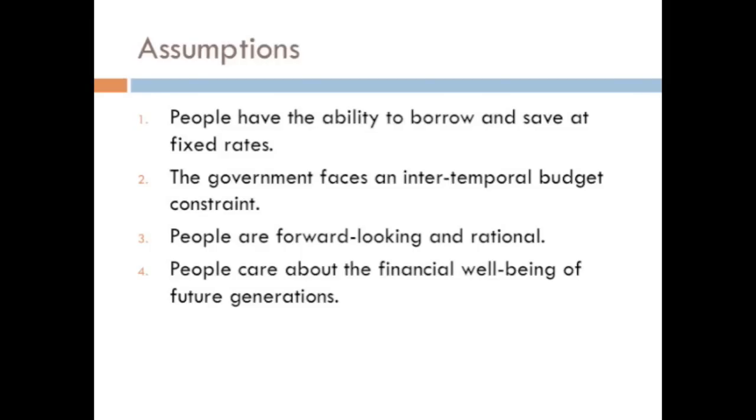So in applying the model of Ricardian equivalence, we have a few assumptions that we have to make. First, we assume that people have the ability to borrow and save at fixed rates. Second, we assume that the government faces an inter-temporal budget constraint. We assume people are forward-looking and rational. And finally, we assume that people care about the financial well-being of future generations.